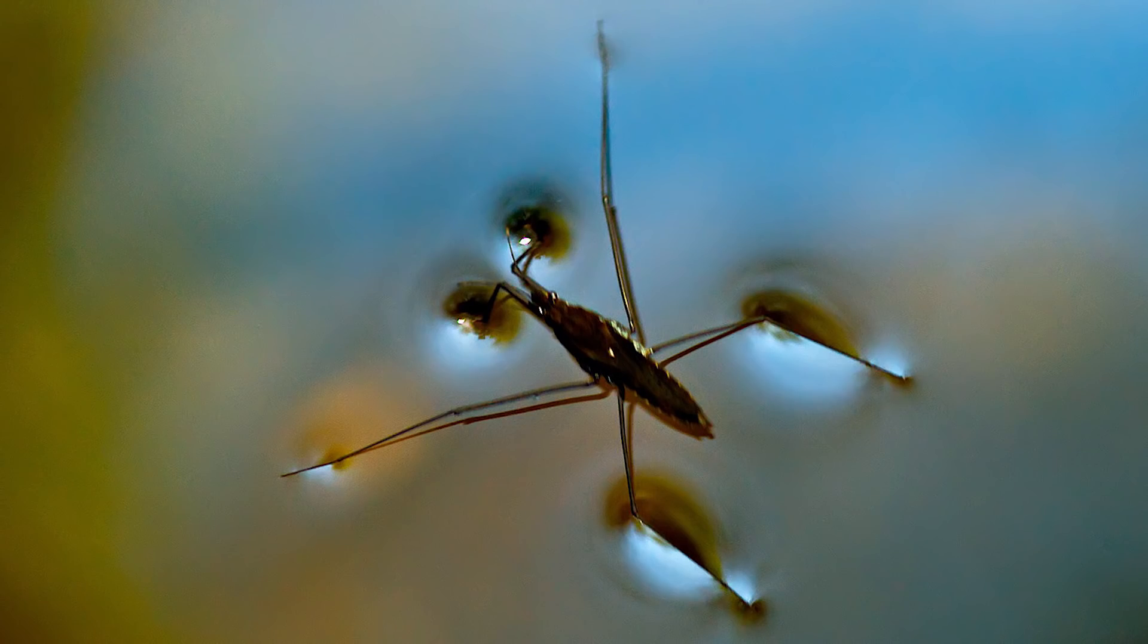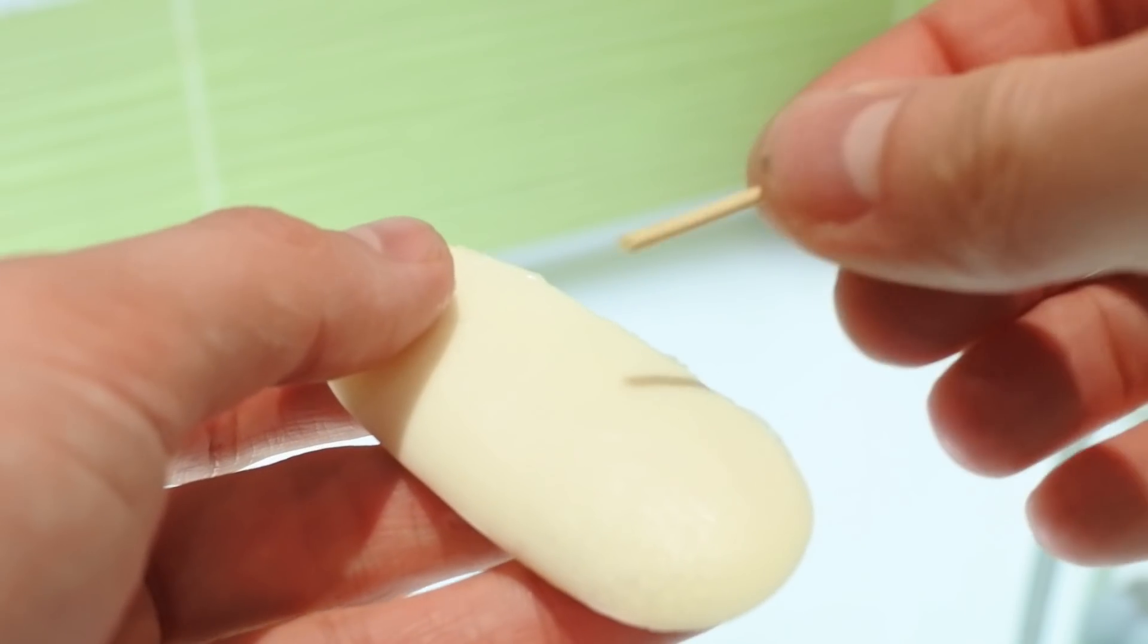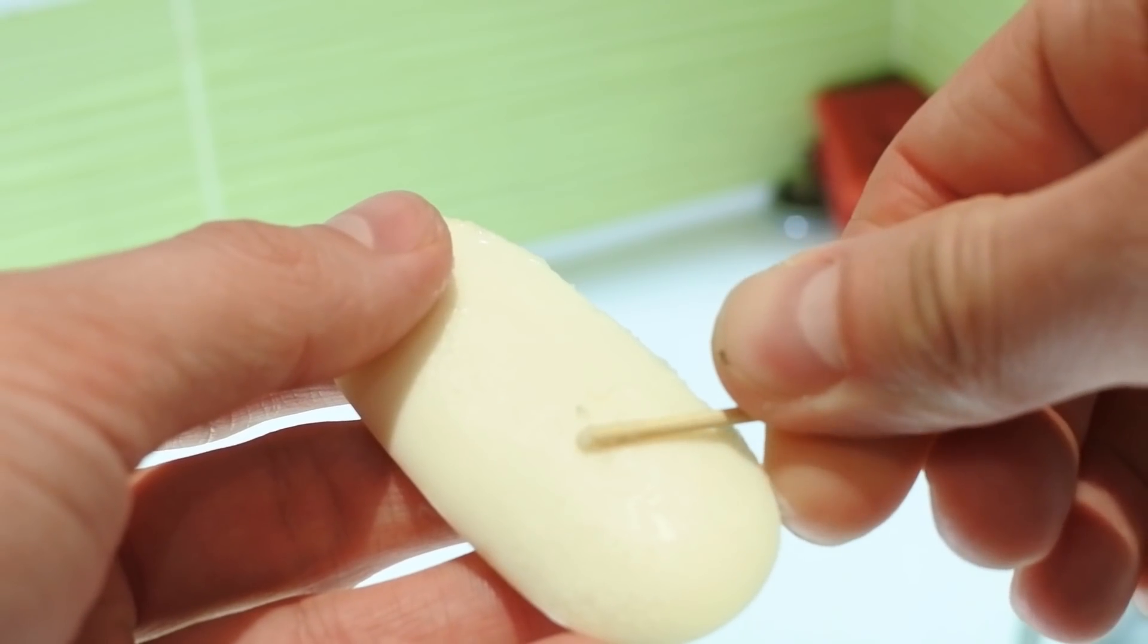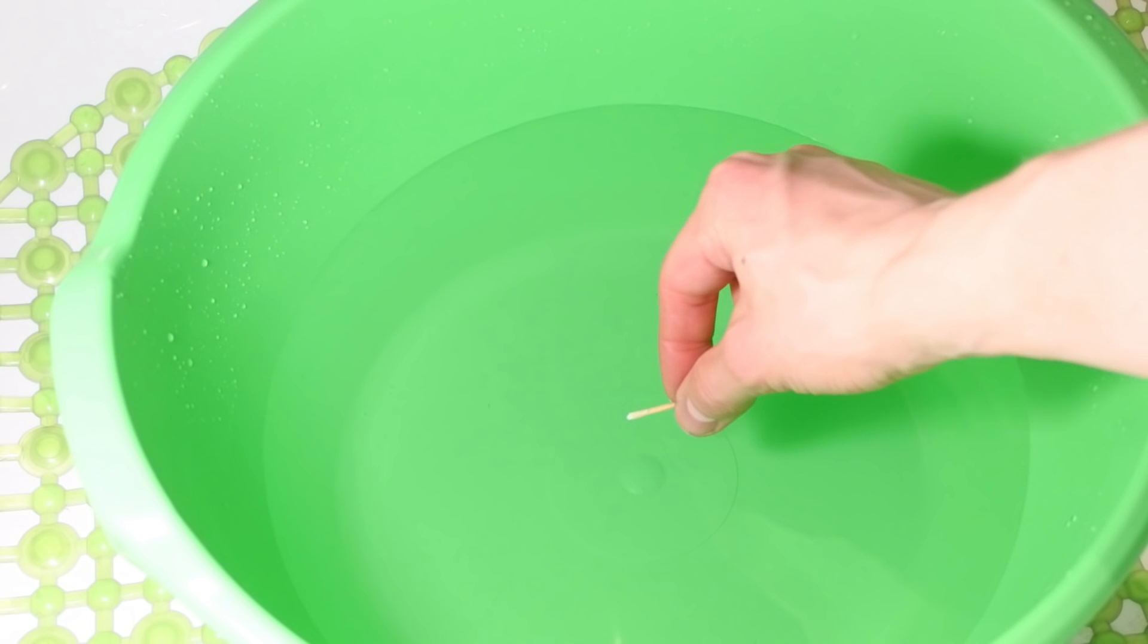Another cool trick with skin stretch effect. Smear a match or toothpick with soap, and then launch this motorboat on water. Why motorboat? Just watch. Also you can use resin instead of soap.